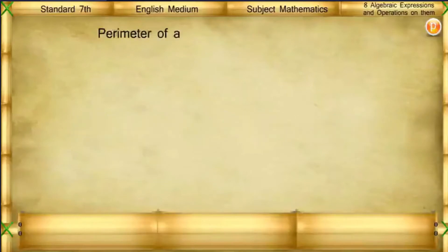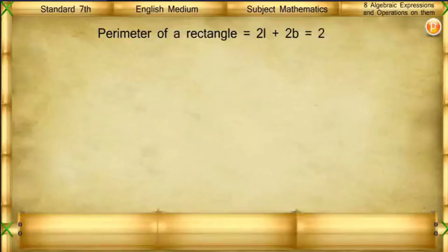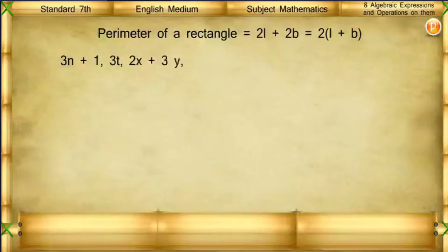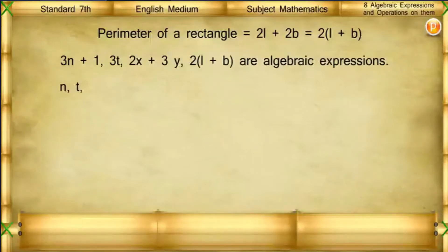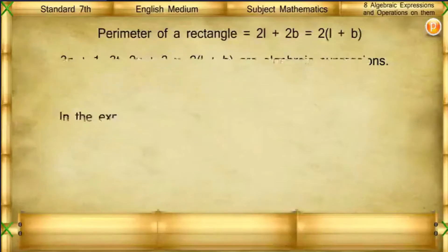Algebraic expressions: The perimeter of a rectangle is equal to 2L plus 2B, which is equal to 2 into brackets L plus B. Other examples include 3N plus 1, 3T, 2X plus 3Y, and 2 into (L plus B). These are all algebraic expressions. N, T, Y, L, B, and X are the variables in these expressions.